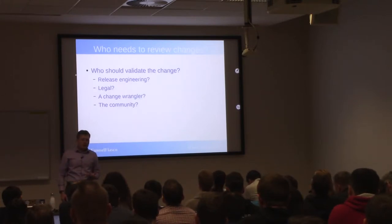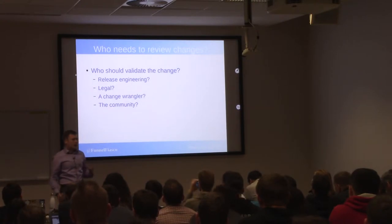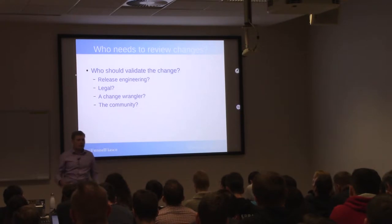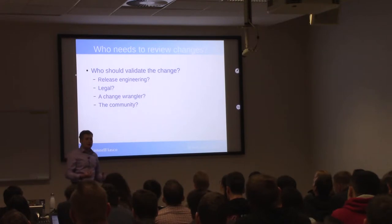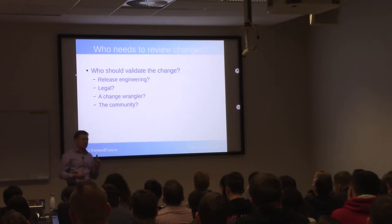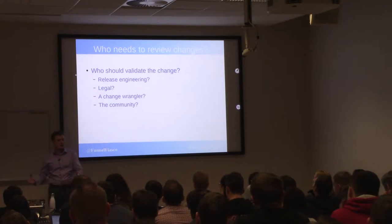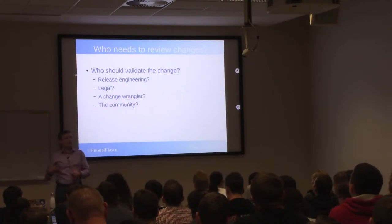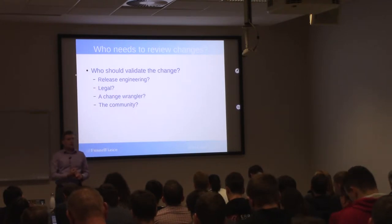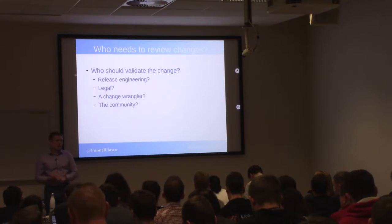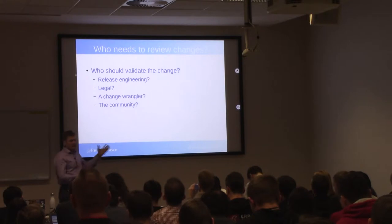One of the things we want to talk about is who needs to review changes — and this isn't necessarily the decision process. Think of it as a linting process: who gets a voice versus who gets a vote. Do you have a release engineering team who needs to say, "yes, this change will allow us to continue producing our release" or "this change is going to break our release process"? Are there legal implications — a new upstream package with a different license, changes to trademarks? You might need some sort of sign-off.